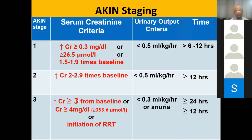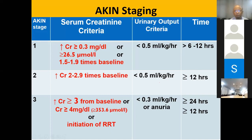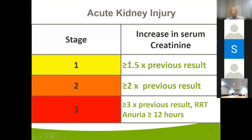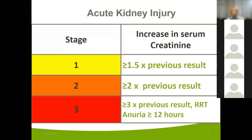This staging is especially important in ICU settings, and it is very important to note that urine output is a key parameter. In terms of serum creatinine: stage 1 is more than 1.5 times the previous result; stage 2 is more than 2 times; stage 3 is more than 3 times from the previous result, or anuria for more than 12 hours.